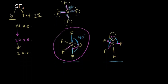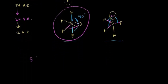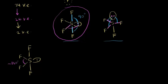Let's redraw the winning structure: sulfur in the center, two fluorines and the lone pair in the equatorial plane, and one fluorine axial above and one axial below. For bond angles: the equatorial fluorine–sulfur–fluorine bond angle is ideally 120 degrees; the axial-to-equatorial fluorine angle is 90 degrees; and the axial fluorine–sulfur–axial fluorine angle is 180 degrees.